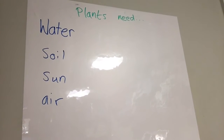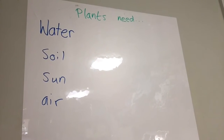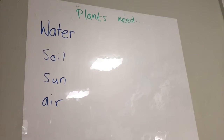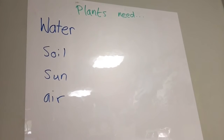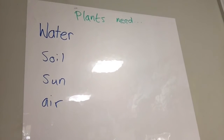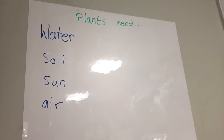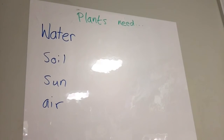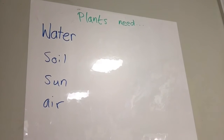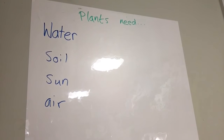Last time we said that plants need water, soil, sun, and air, and we are going to test this by setting up five experiments.